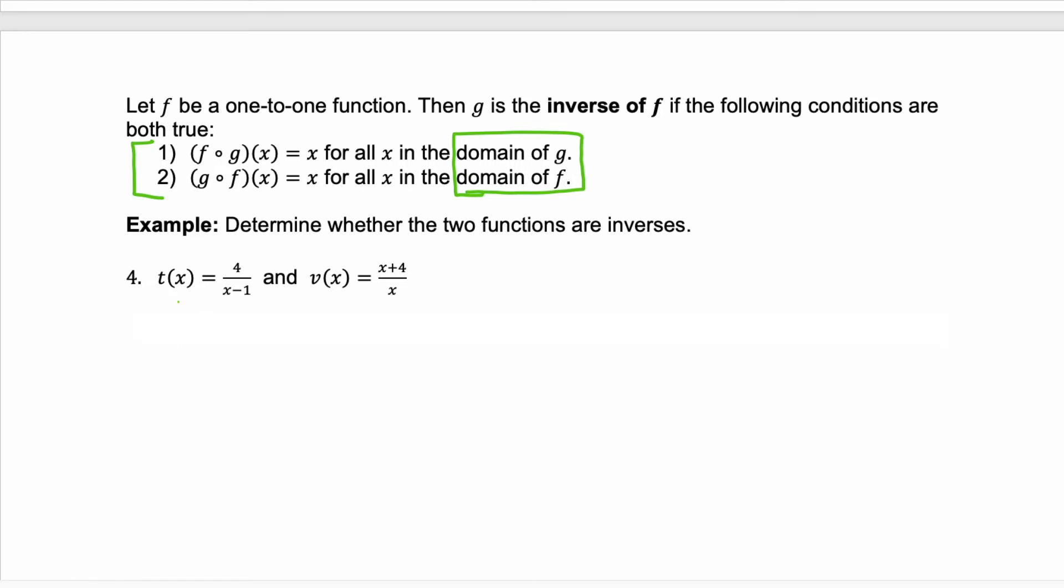In example four, we need to determine if the two provided functions are inverses. So what we need to do is evaluate the composition. So we're going to start with t of v of x. So remember what that means. We're going to substitute in our v function for x in our t function. So we'll have four over, here we substitute in for that x, we put our v function, minus one.